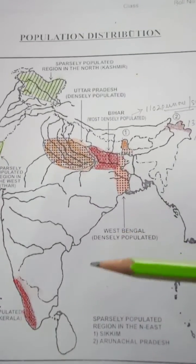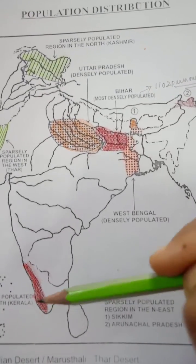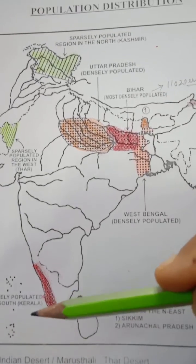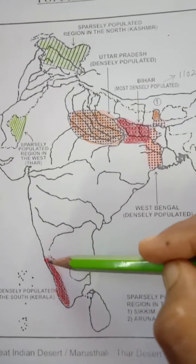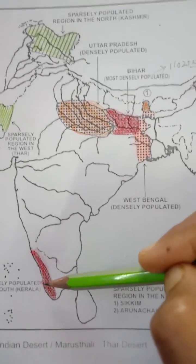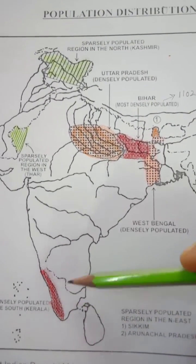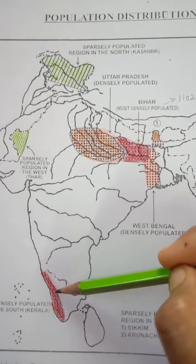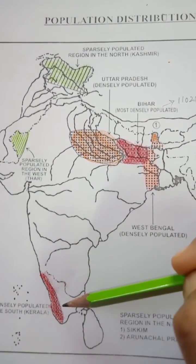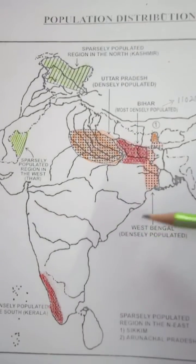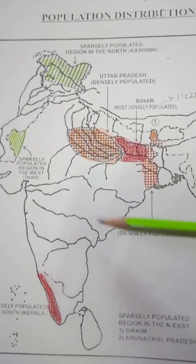Sometimes in the exam it can be asked: which is the highest density state of southern India or peninsular India? The answer is Kerala. Kerala is the most densely populated state of southern India because all kinds of facilities are available there — development level, literacy, and transportation are all higher than other states of India.